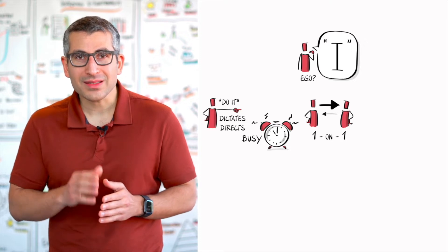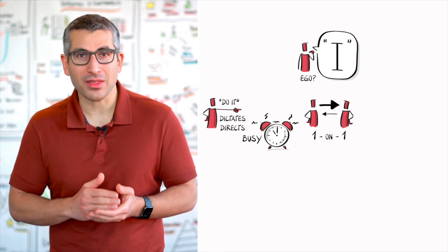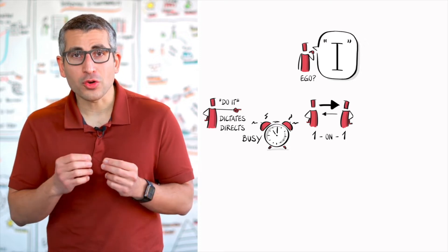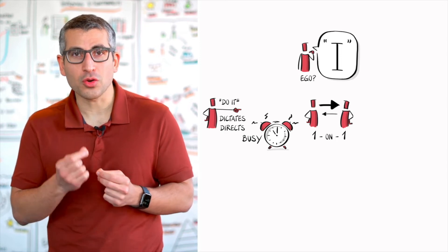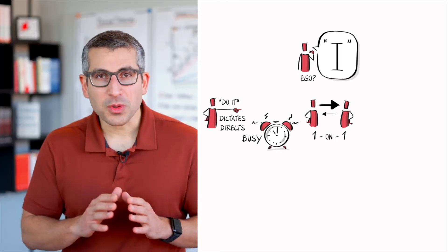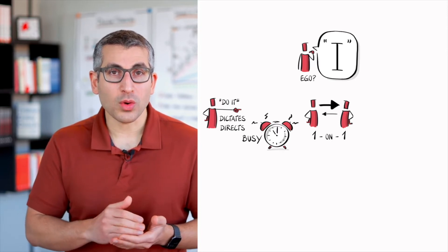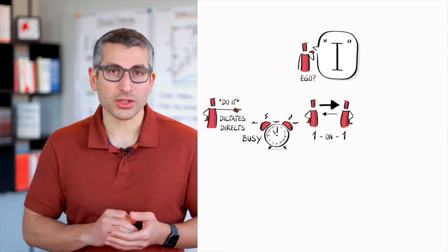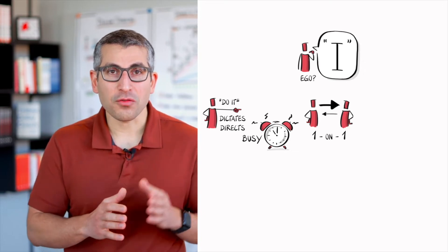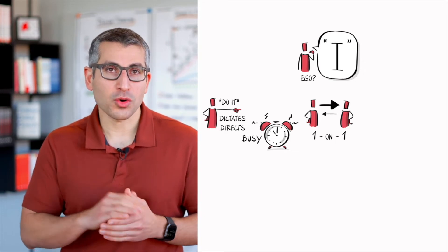Again, one-on-one meetings doesn't necessarily have to be a bad thing. We will explore great ways of how to structure your one-on-ones later. But in this particular scenario, the expert leader seems to be running one-on-ones, especially one-directional one-on-ones. Hence the thicker arrow from the leader to the subordinate.